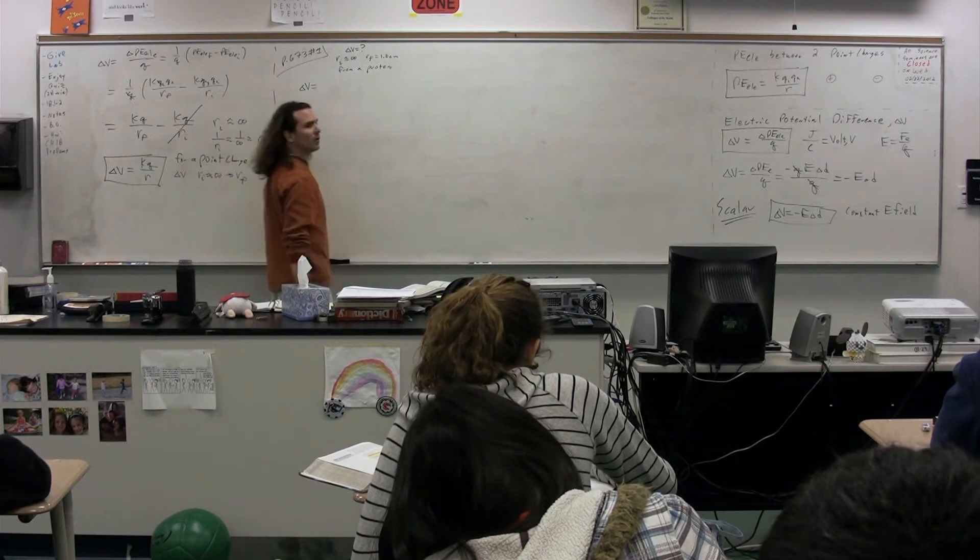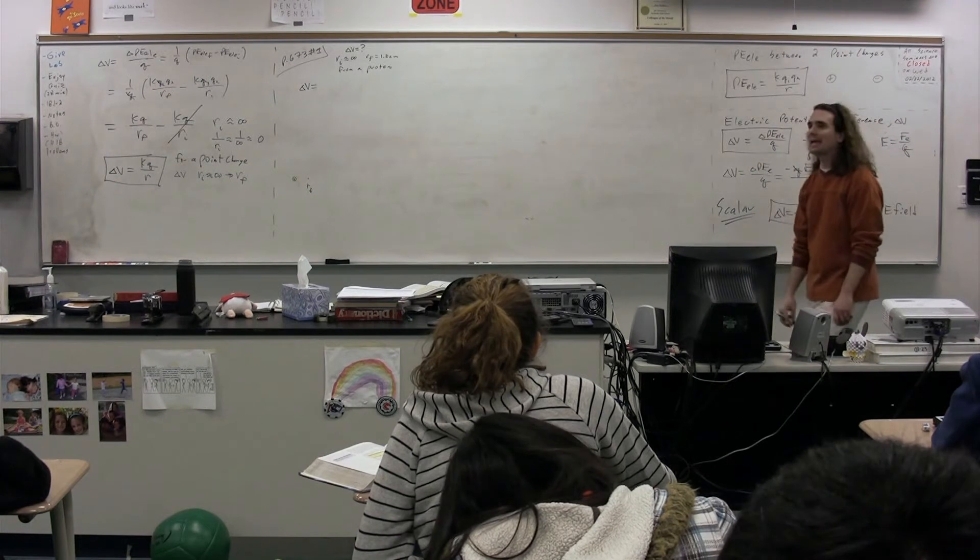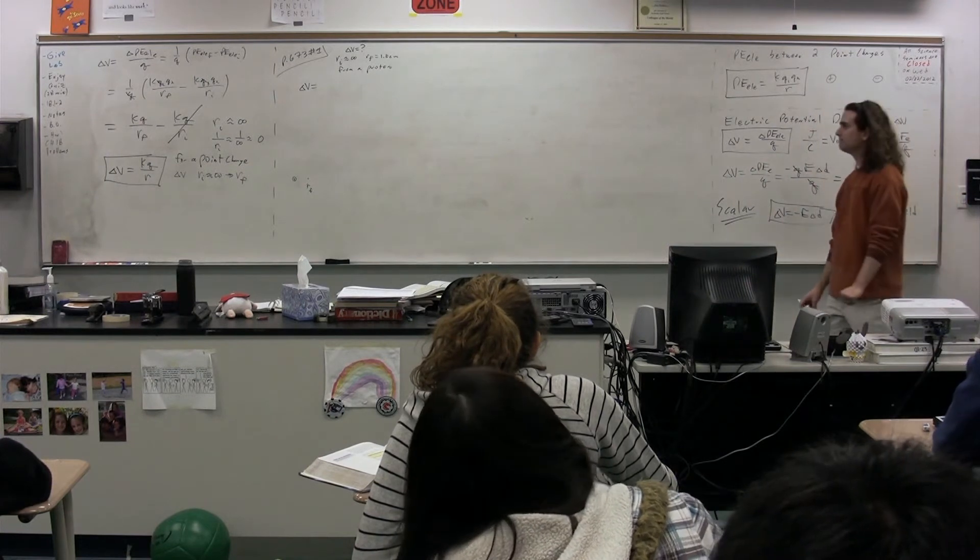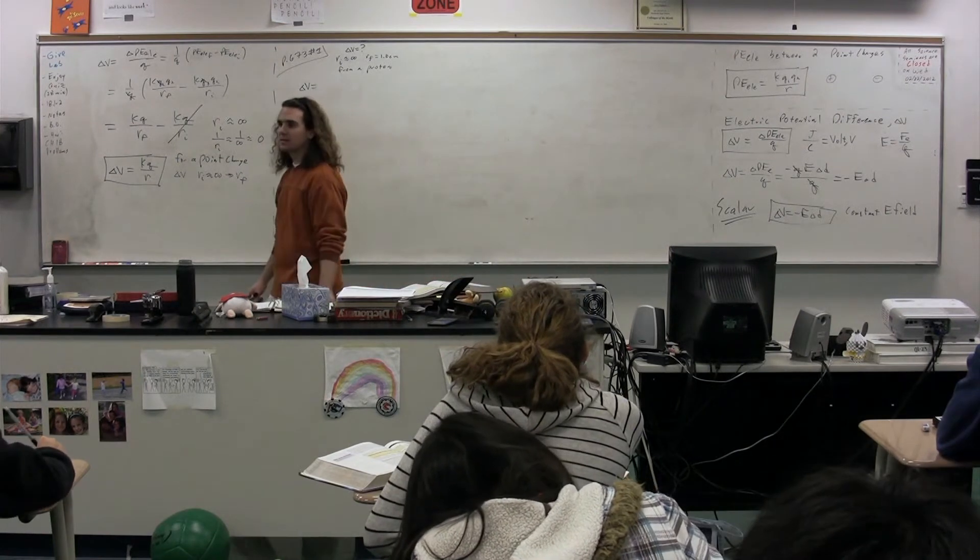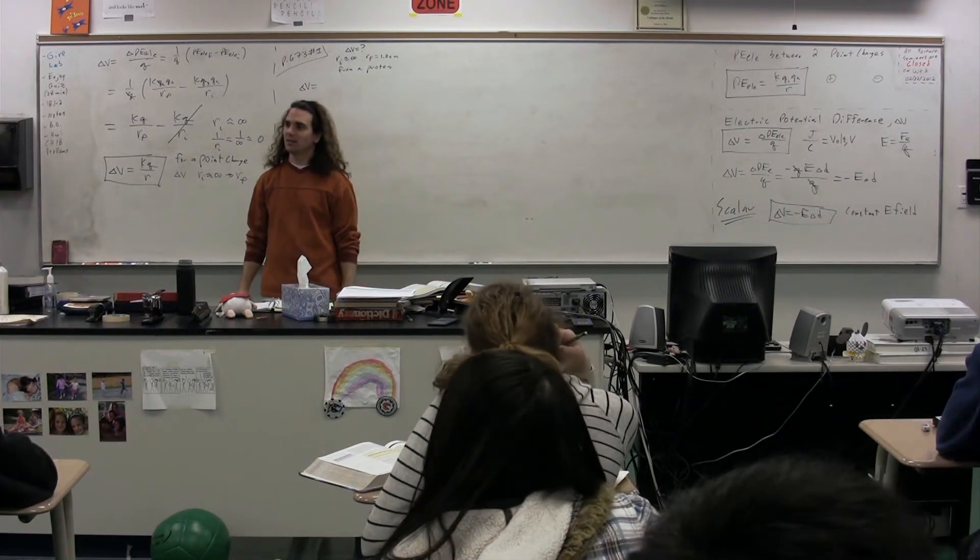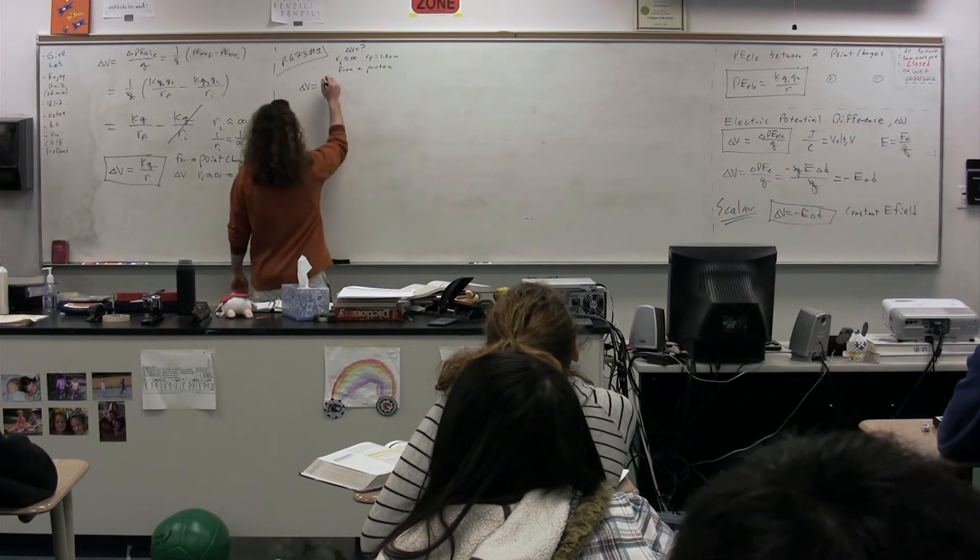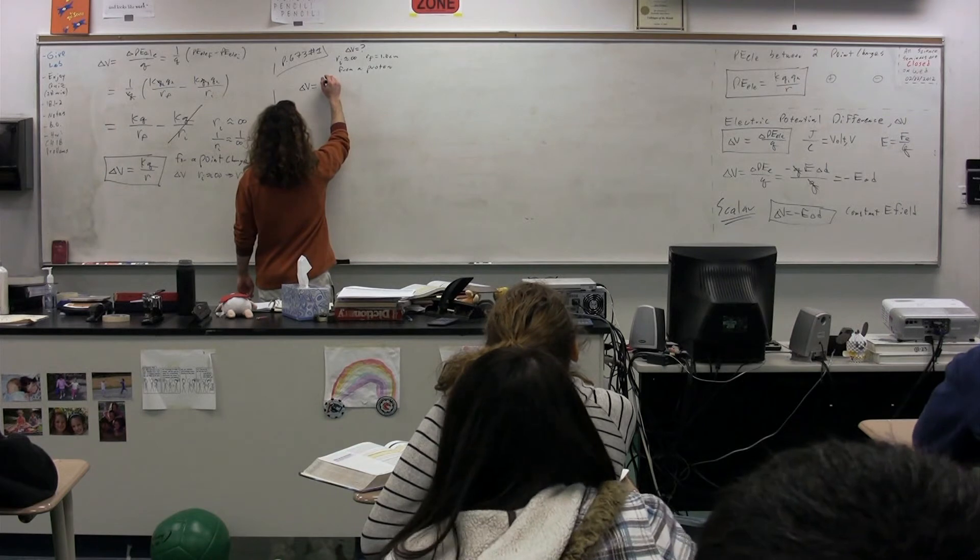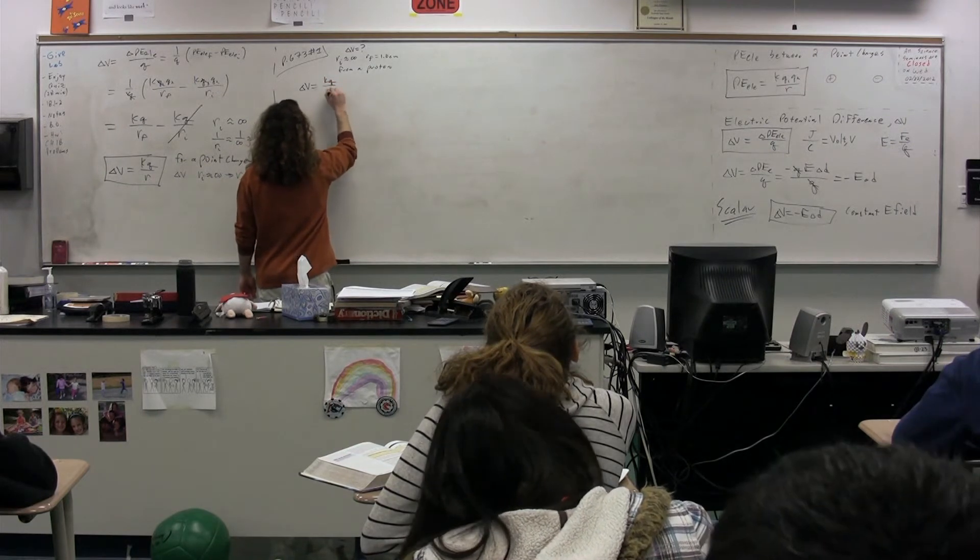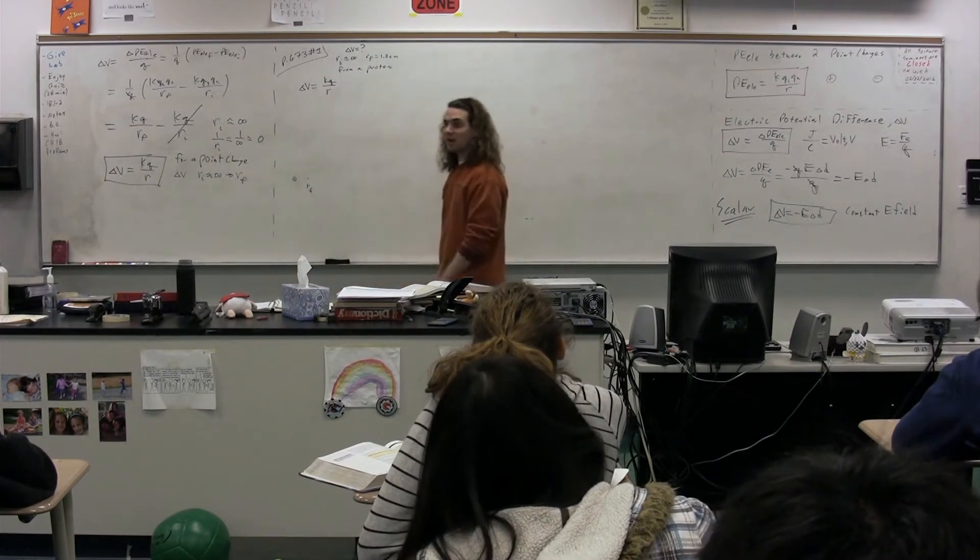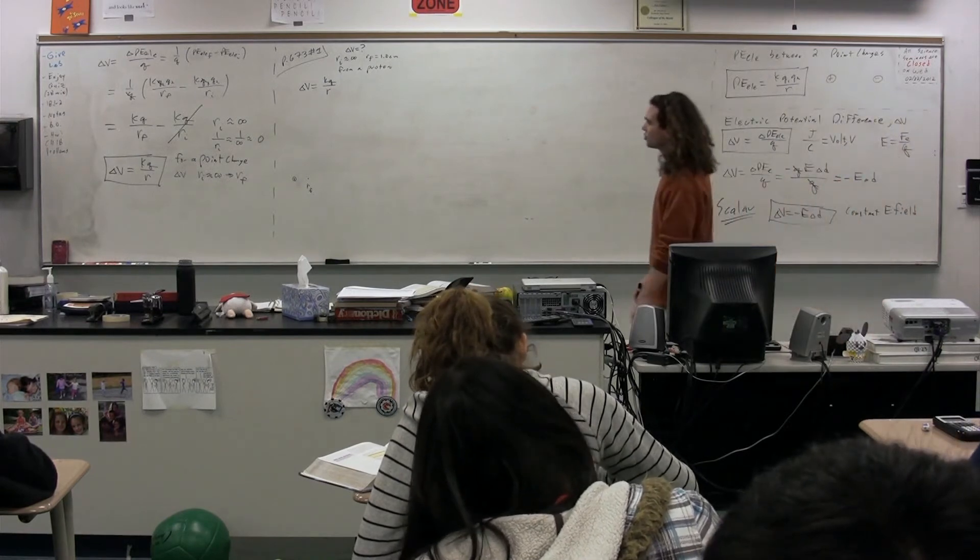We have three equations for the electric potential difference. Which one are we going to use this time and why? Tell me what it is. Again, as you said, because we have a point charge we're going to use the electric potential difference for a point charge.